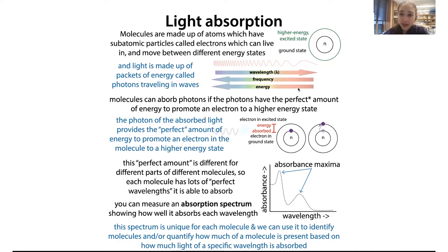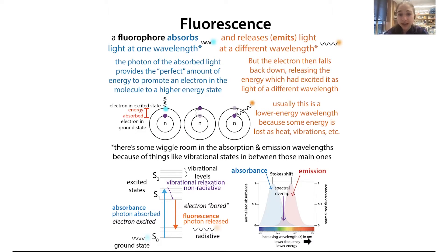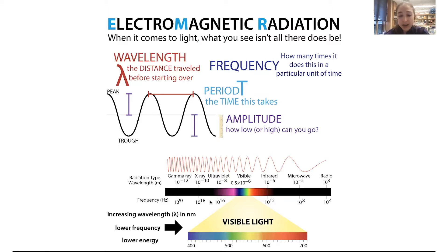The difference between the high and low energy states depends on the molecular configurations — what atoms are attached to what. Long story short, when you have resonance, it decreases the distance between these states, so it decreases the amount of energy needed to reach an excited state. This pushes the required energy into a wavelength range that we can detect.